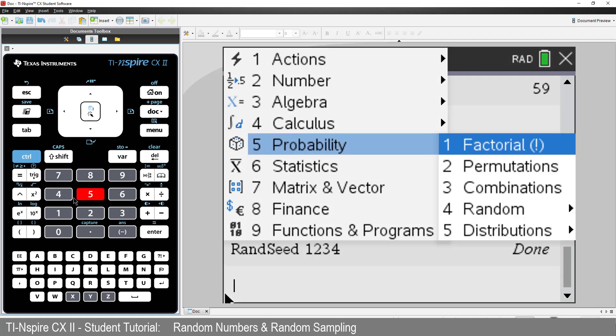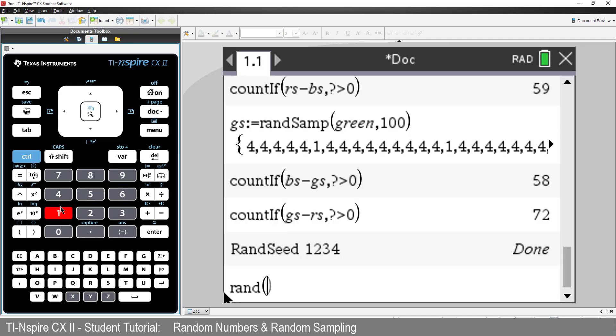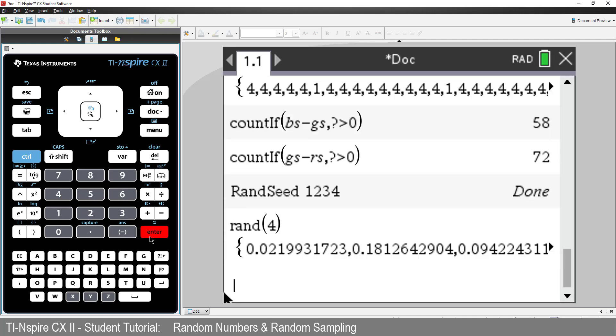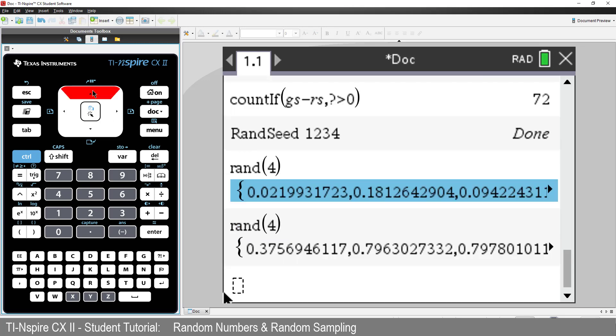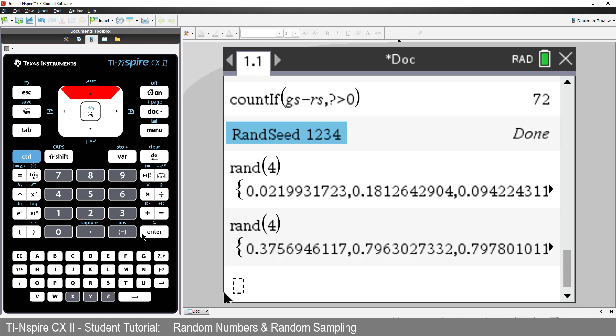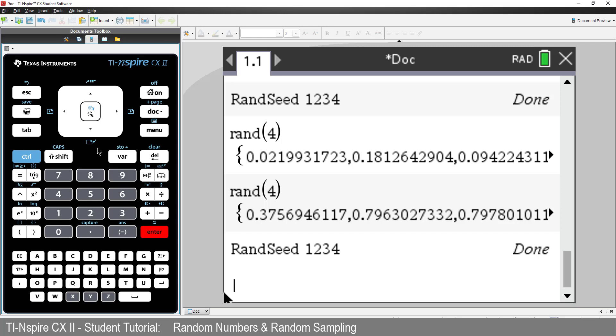Now I'll generate four random numbers. If I press enter again, of course I'll get a different set of numbers. But I'm going to go back and use the seed command again and put exactly the same number in to seed my random numbers.